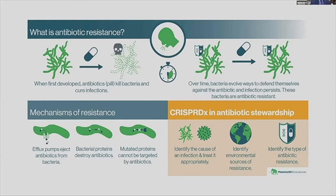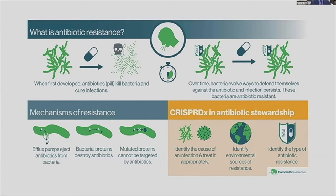When first developed, antibiotics are pills to kill bacteria and cure infections. Over time, as the picture shows, bacteria started developing defenses to defend themselves. This is a natural phenomenon found in all kinds of living organisms, including prokaryotic cells like bacterial cells. They can acquire antibiotic resistance for their own survival. For example, the efflux pump ejects antibiotics from bacteria — they can develop that methodology within themselves.